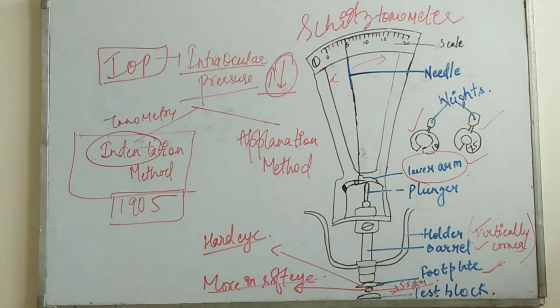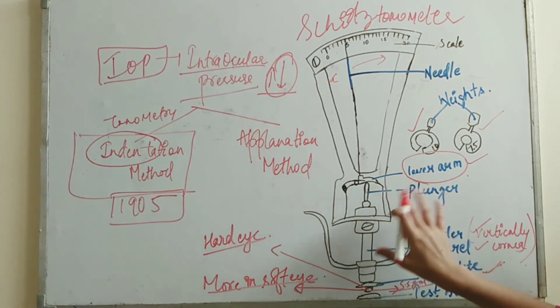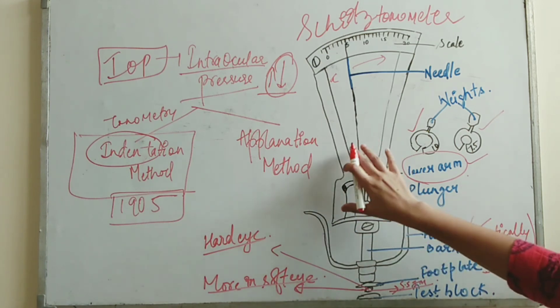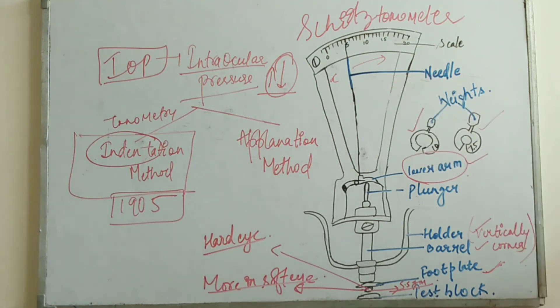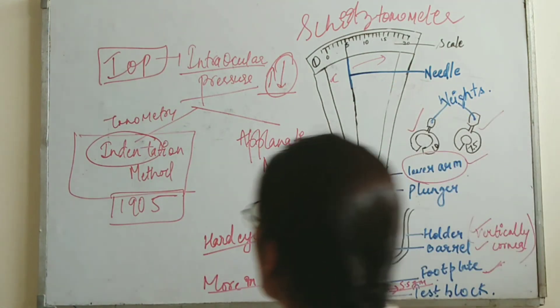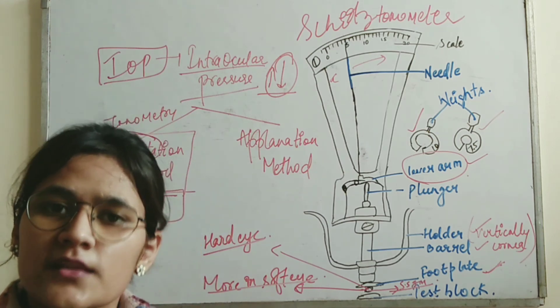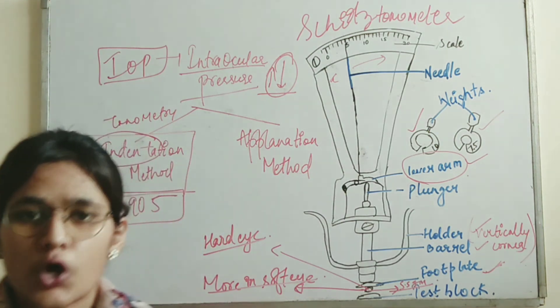This is a test block. Test block means we are having an eye to be examined here, and this foot plate rests on the cornea. That makes the plunger move, moving the lever arm, and the lever arm moves the needle to judge the pressure and examine the pressure. Hope you all understand about the indentation method of tonometry by Schiotz tonometer.